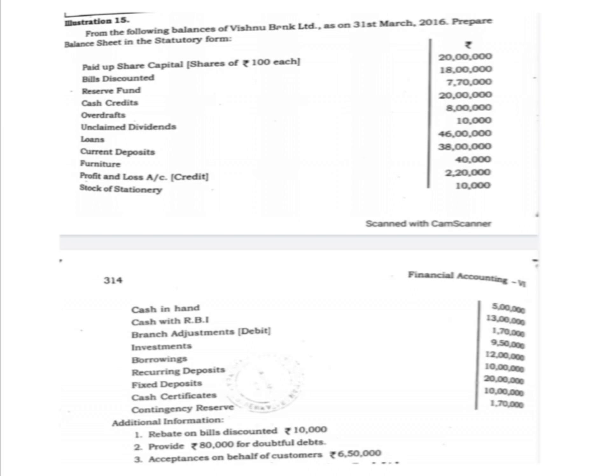Contingency reserve: 1 lakh 70,000. Additional information given — first: rebate on bills discounted, Rs. 10,000. Second: provide Rs. 80,000 for doubtful debts. Third: acceptances on behalf of customers, Rs. 6,50,000. These are the informations given in the question.